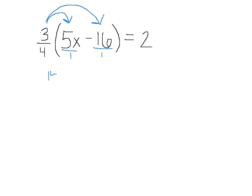So 3 times 5x is 15x, and 4 times 1 is 4. That is the first fraction I got from multiplying these two together. Now for the next fraction it's going to be minus—when I distribute 3 times 16 is 48 over 4.